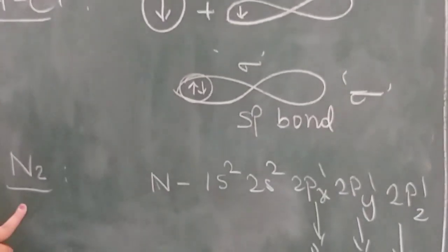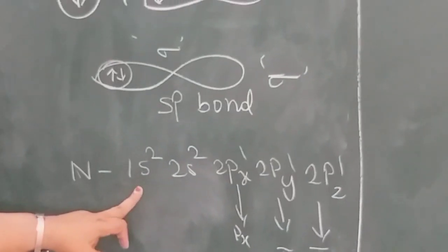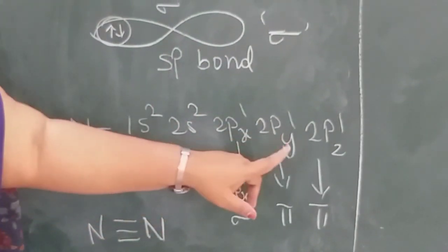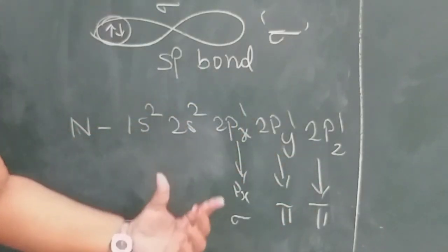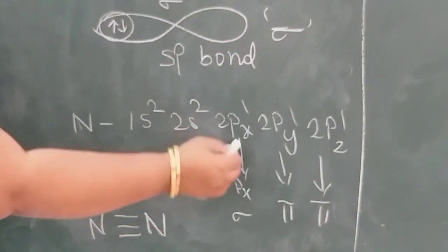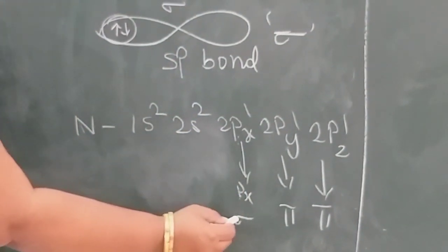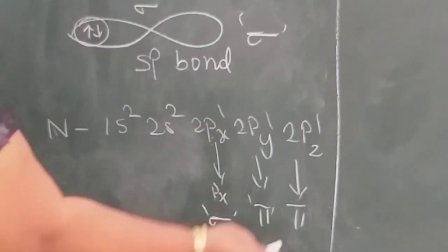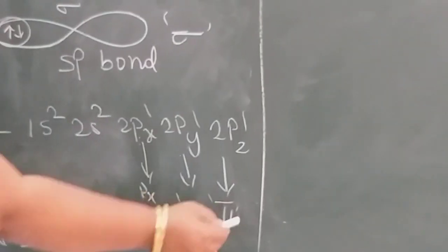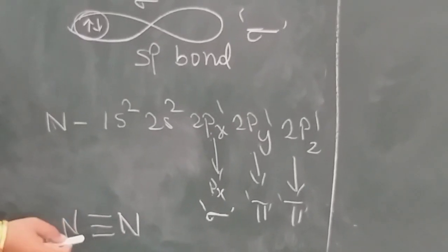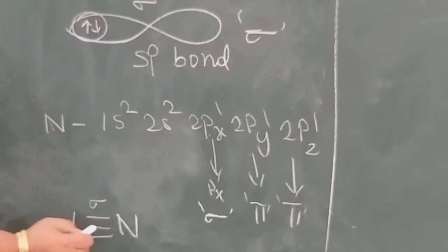Take example of nitrogen: configuration 1s2, 2s2, 2p3. In the ground state: 2px1, 2py1, 2pz1. In another nitrogen atom: px1, py1, pz1. The px-px overlap forms a sigma bond. The py-py overlap forms a pi bond, and the pz-pz overlap also forms a pi bond. That means there is a triple bond between nitrogen and nitrogen — one sigma bond and two pi bonds.